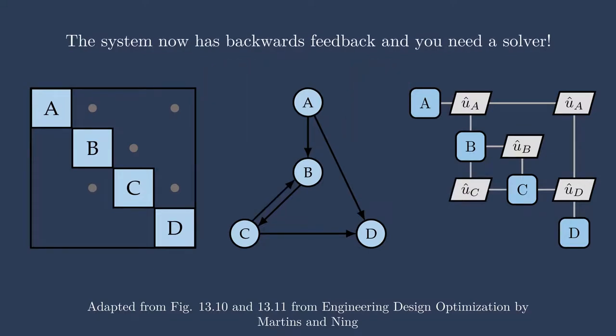Now C is talking to B. C is taking information and giving it to B, and B needs information from C to compute what it needs to do. So all of a sudden, we now have backwards coupling. If sirens are going off in your head, yeah, they should be. We need a solver now to resolve this backwards coupling.